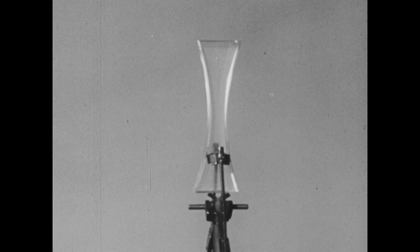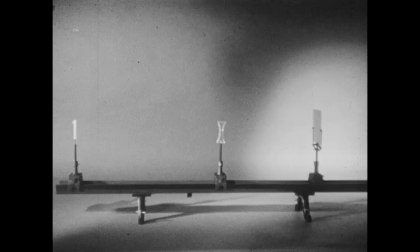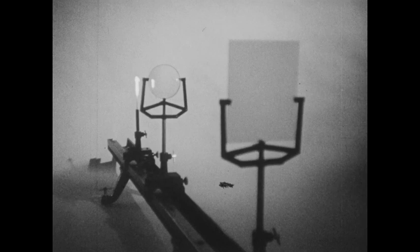Concave lenses are thinner toward the center than at the edges. Using this kind of lens in the optical bench, and moving our object toward the lens, we cannot find a point at which an image is projected upon the screen.